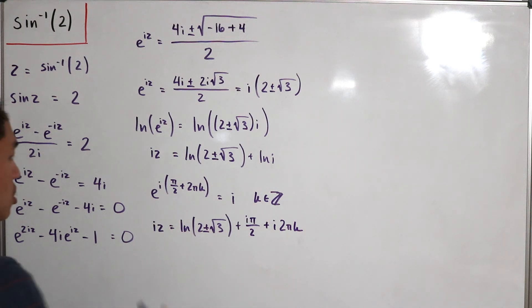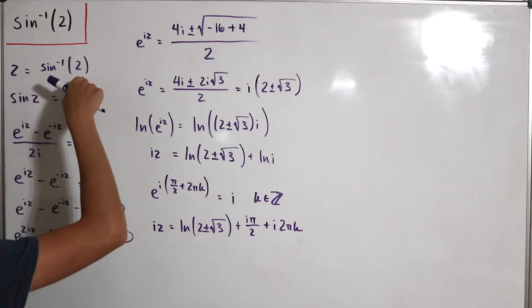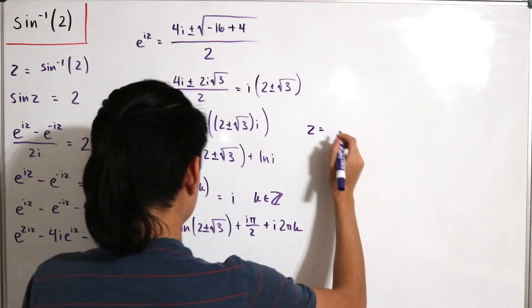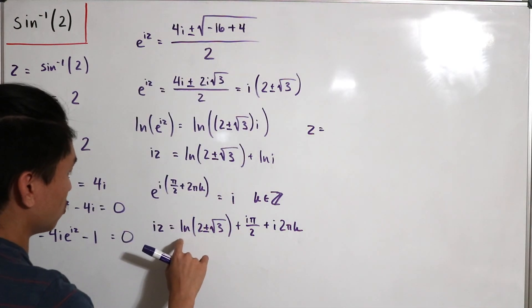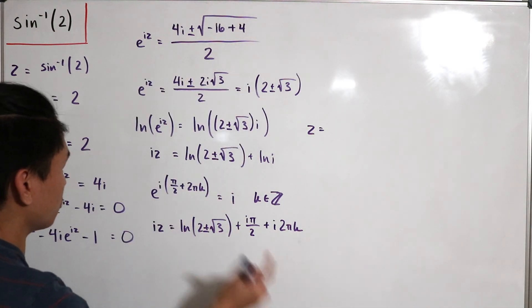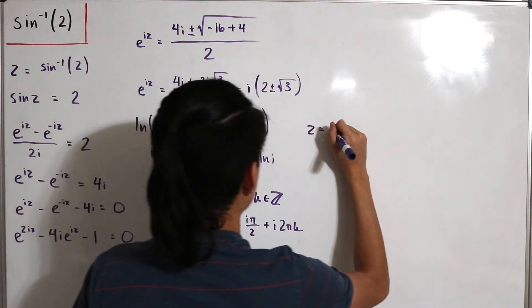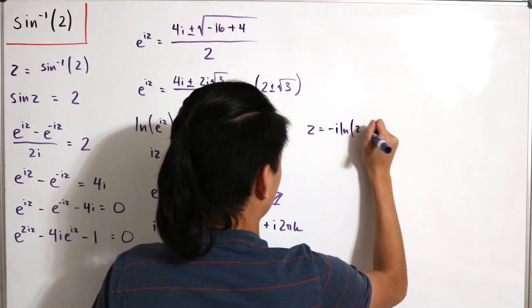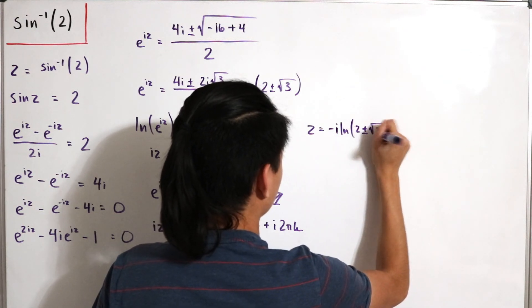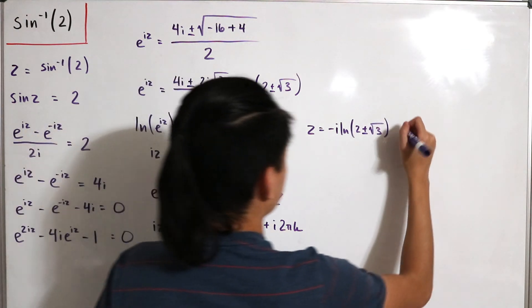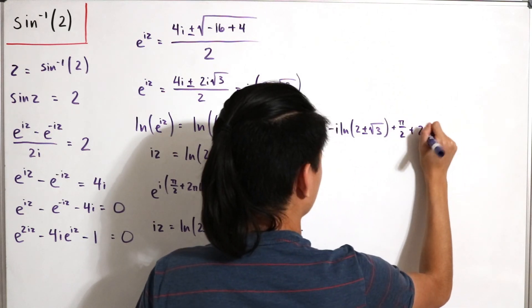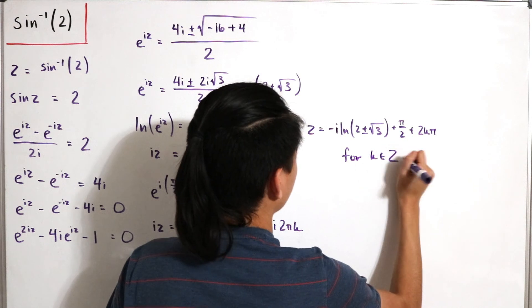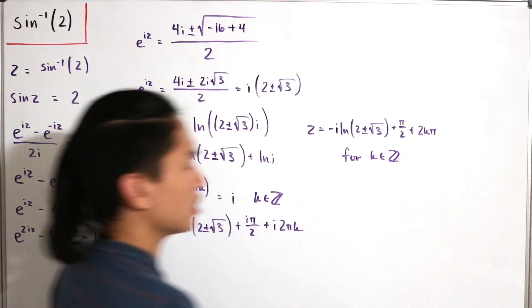So therefore z is equal to, so this will be i in the denominator, so I can just multiply i to both the top and bottom, so that becomes a negative i, then ln of 2 plus and then minus the square root of 3, then divide by i, so plus pi over 2, and then plus 2k pi, for k is in the integers like so. All right, and there we go, all in, final answer. See, I told you